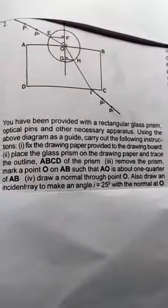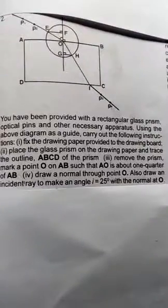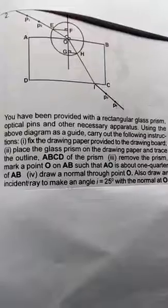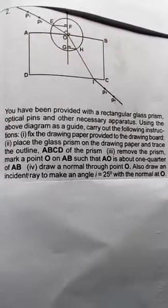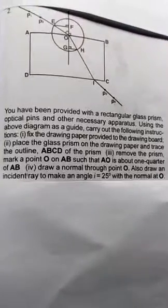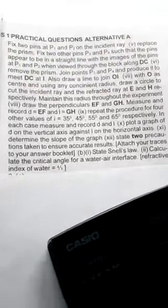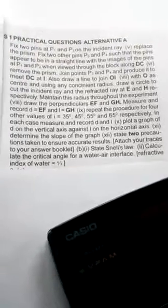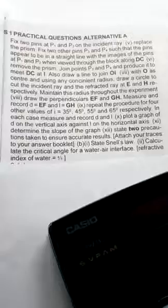Remove the prism, mark a point O on AB such that it is about one quarter of AB. Draw a normal through point O. Also draw an incident ray to make an angle i equal to 25 degrees with the normal at O. Then fix two pins at P1 and P2 on the incident ray. Replace the prism. Fix two other pins P3 and P4 so that the pins appear to be in a straight line with the images of the pins at P1 and P2 when viewed through the block along DC.